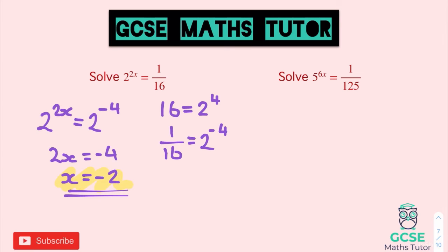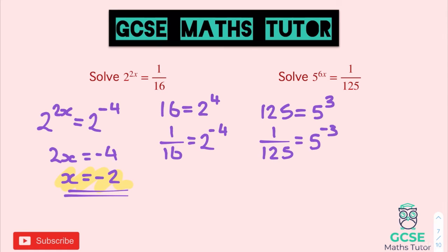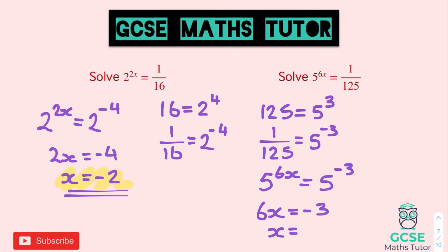The second one is a little trickier. We've got 5 to the power of 6x and 1 over 125. Now 125 is 5 to the power of 3, so 1 over 125 equals 5 to the power of negative 3. Setting the powers equal: 5 to the power of 6x equals 5 to the power of negative 3, so 6x equals negative 3. Dividing by 6: x equals negative 3 over 6, which simplifies to negative a half. That's our final answer — x equals minus a half.